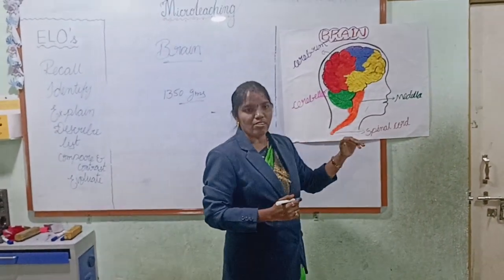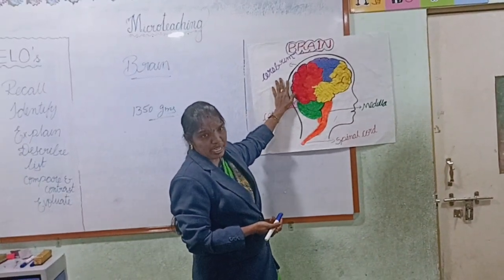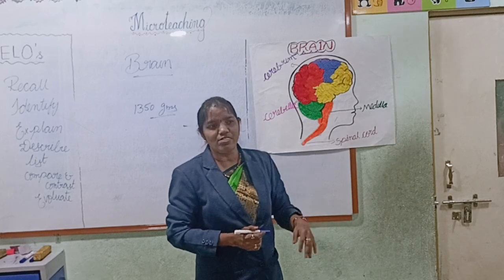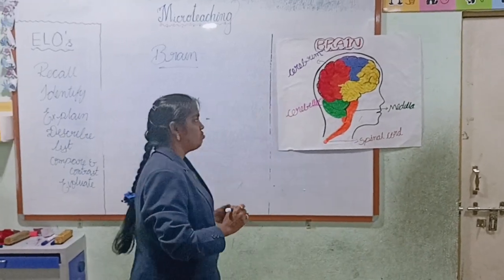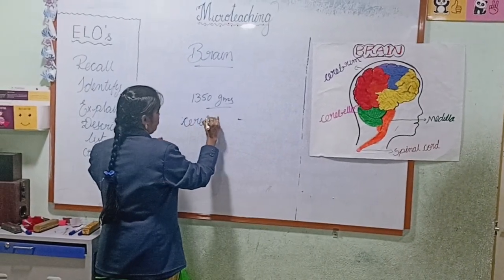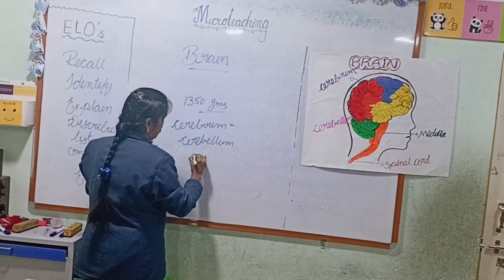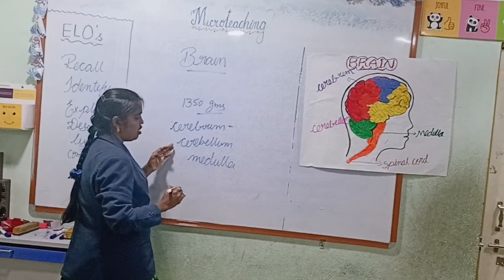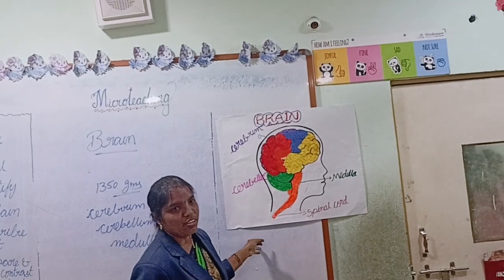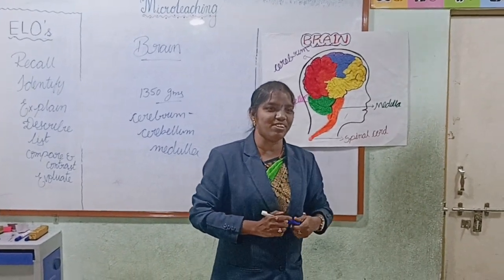So, now I want to recall all the topics about the brain. Today I explained about the brain. The brain is one of the largest and most complex organs in our body. What is the average weight of the brain? That is 1350 grams. What are the three main parts of the brain? Cerebrum, cerebellum, and medulla. What is the largest part of the brain? Cerebrum. This is the largest part of the brain.